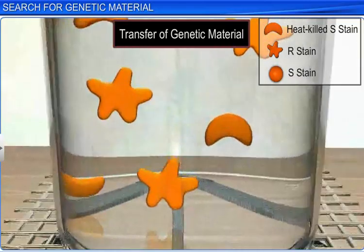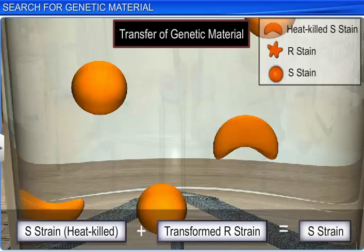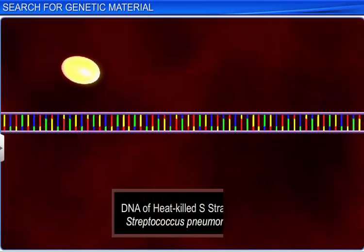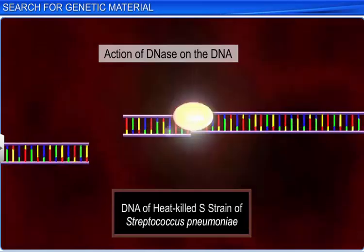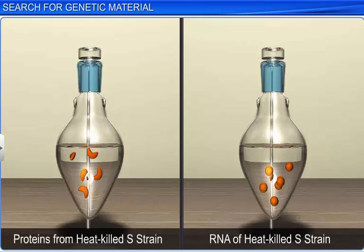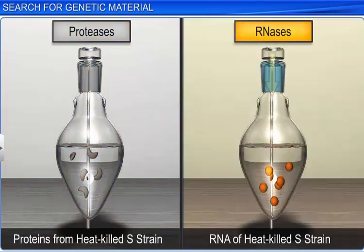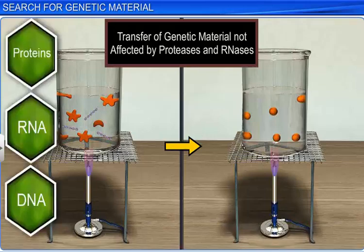Through their experiments, they discovered that it was the DNA from the S strain bacteria that had transformed the R strain bacteria. They also found that digestion of the DNA of heat-killed S strain with DNase inhibited transformation. Further, the scientists also discovered that addition of proteases, or protein-digesting enzymes, and RNases, or RNA-digesting enzymes, did not affect the transformation. This led to the conclusion that proteins or RNA were not the transforming substances, and implied that DNA was the cause for the transformation.